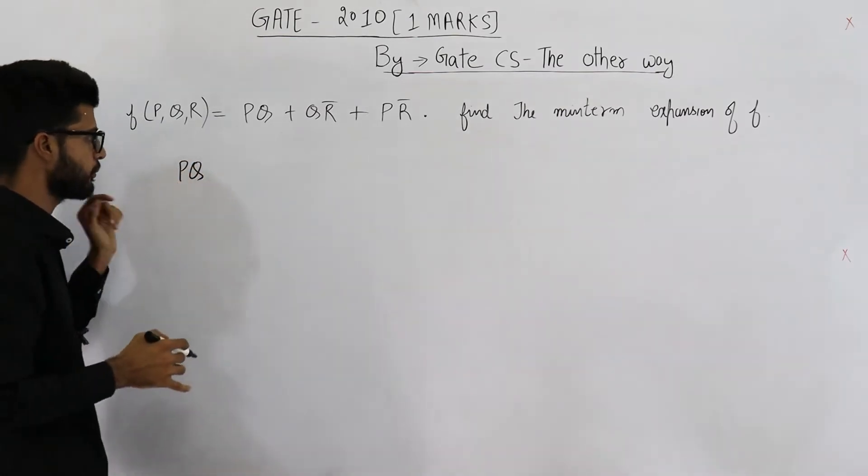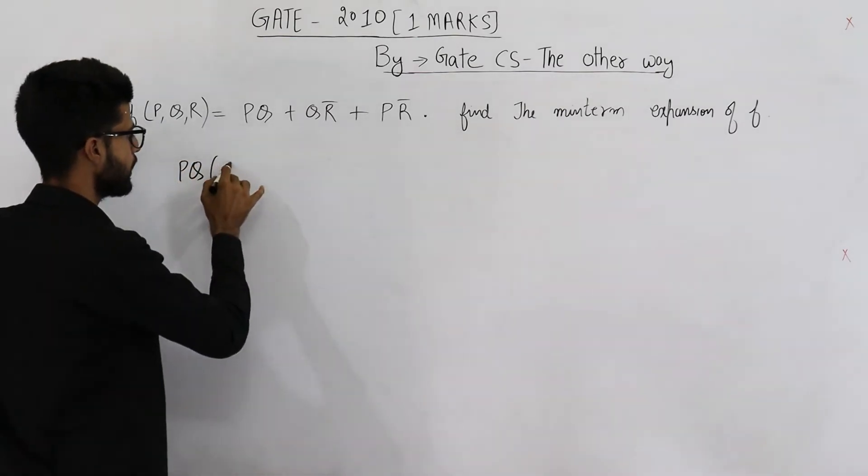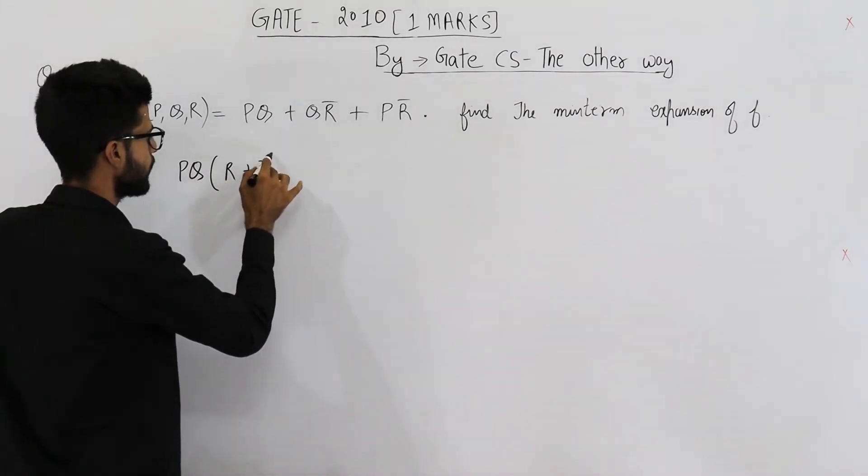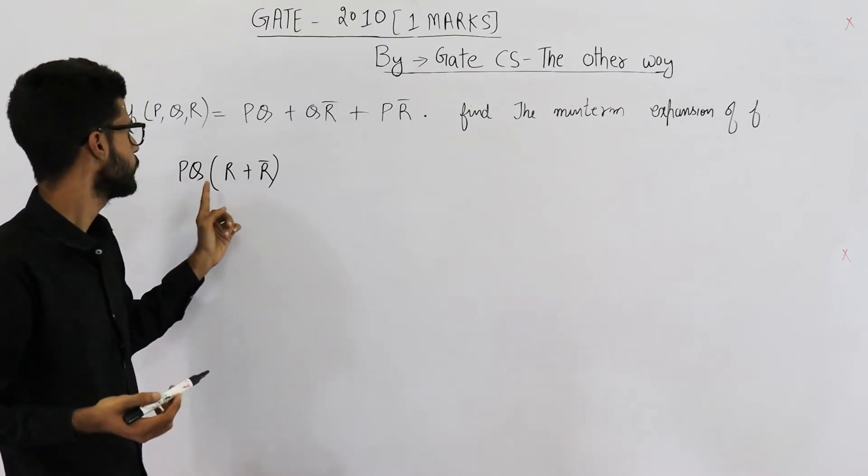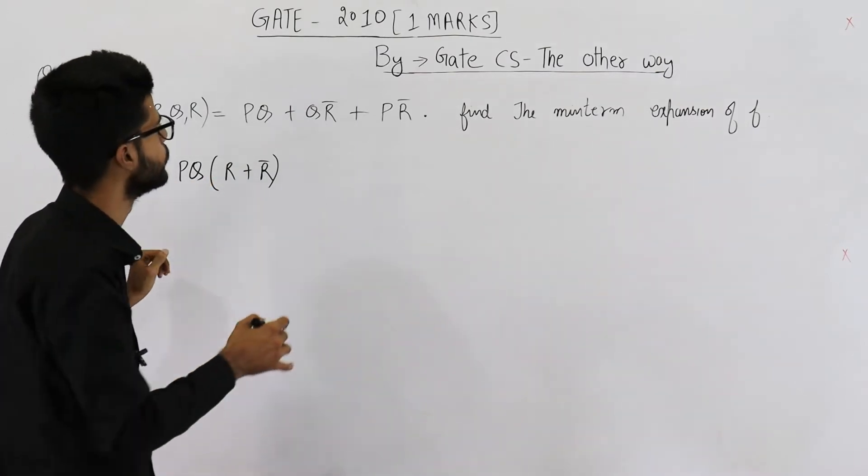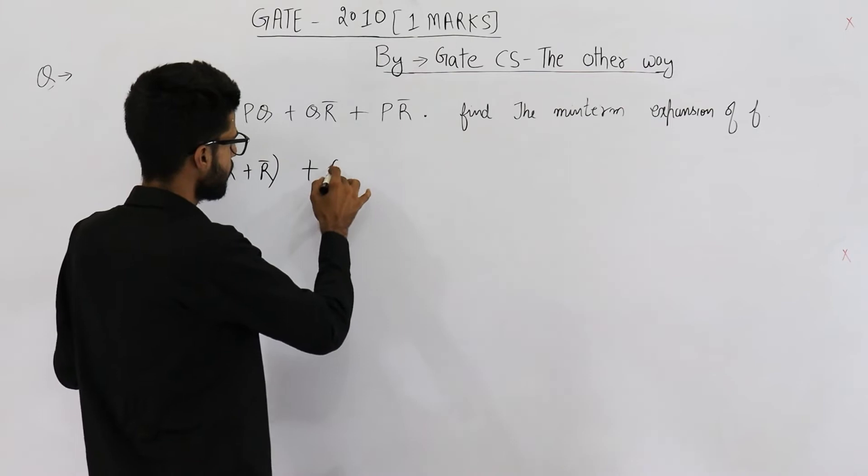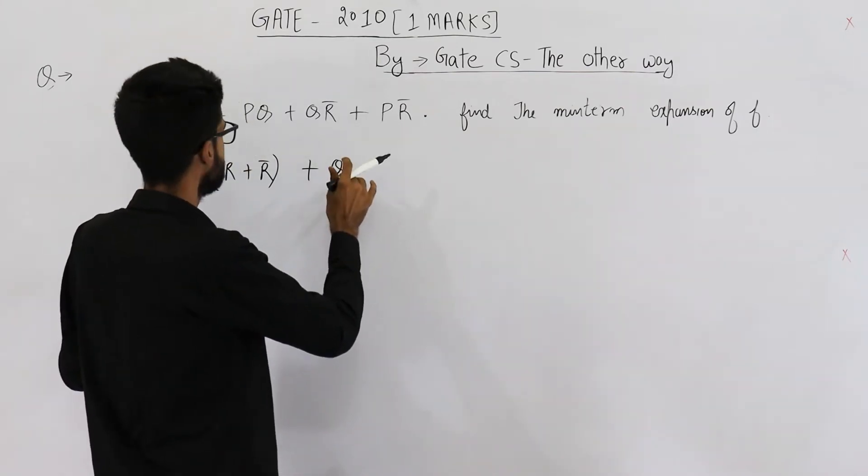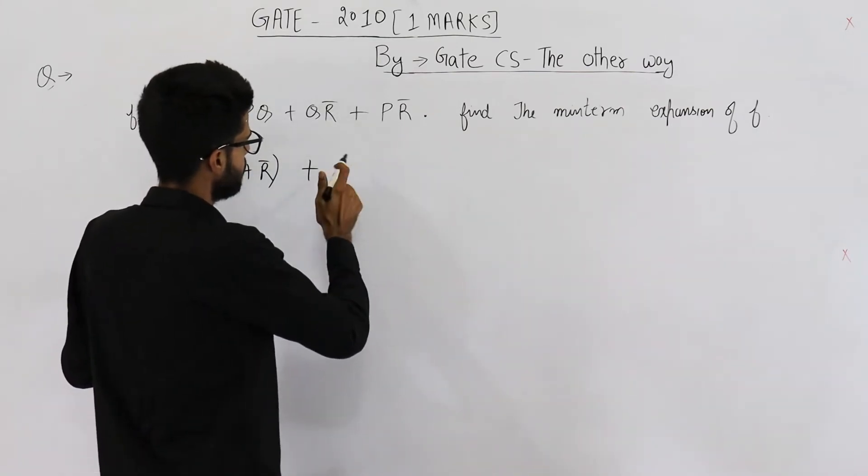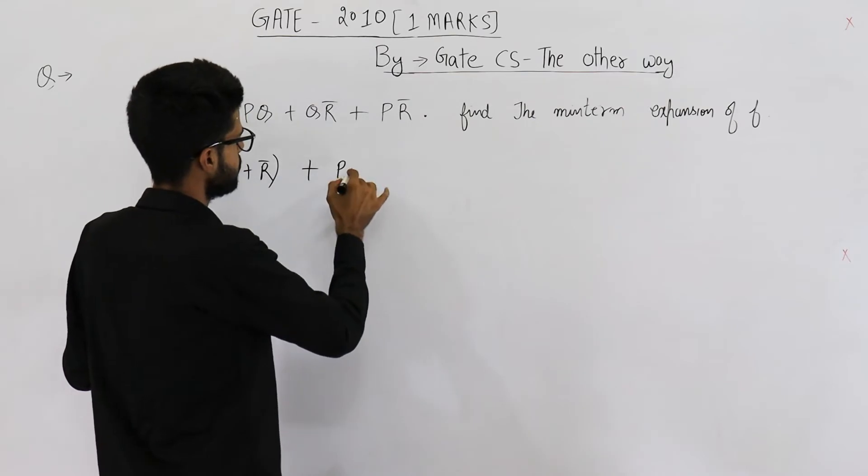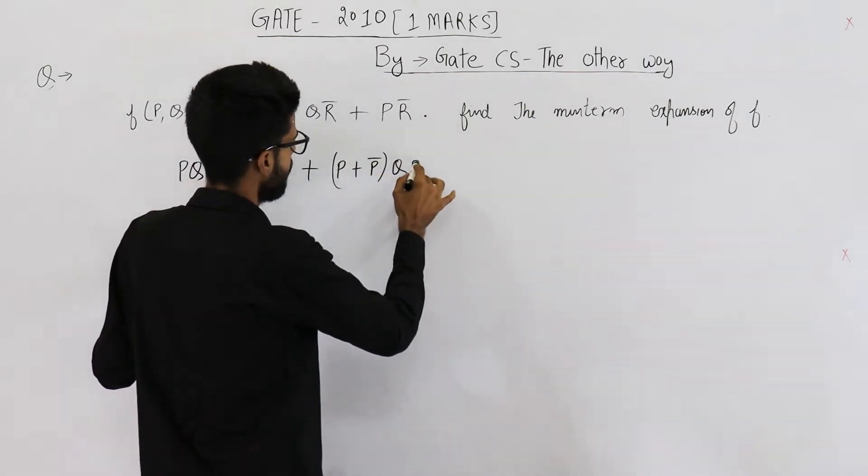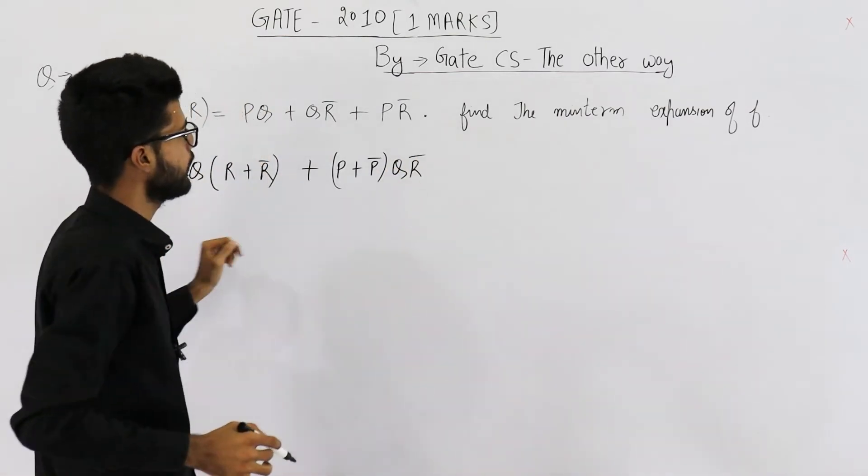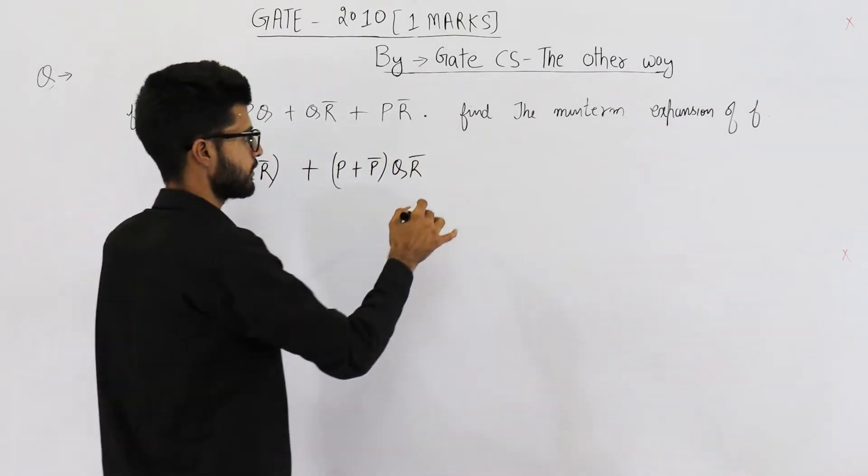We already have pq. I am multiplying it by r plus r bar which is nothing but one only. r plus r bar is one. So it is pq dot one which is pq. Similarly here also let's add p. p is missing in this term. So p plus p bar into q r bar and here we don't have q. Let's add it.